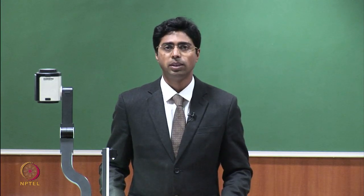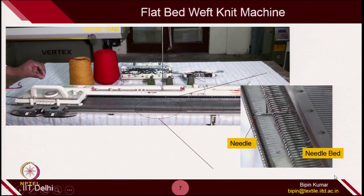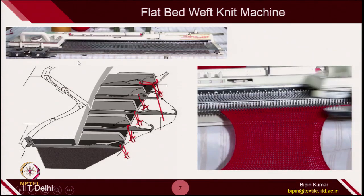The first machine I am going to show you is the single flat bed machine. In today's week, we covered many theories regarding the single flat bed machine. You came across the needle, the needle bed, how the needle was arranged on the bed, and the cam jacket — how the cam helps to move the needle coming out from the bed and going back inside.